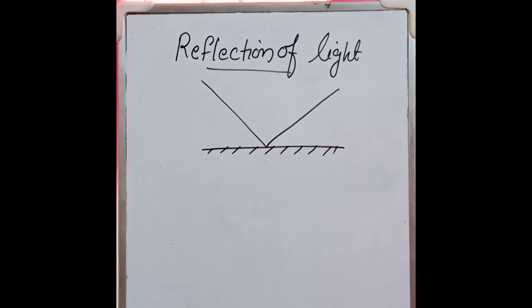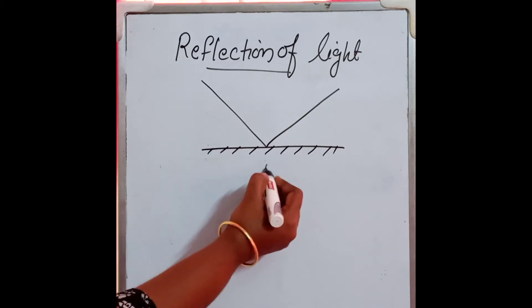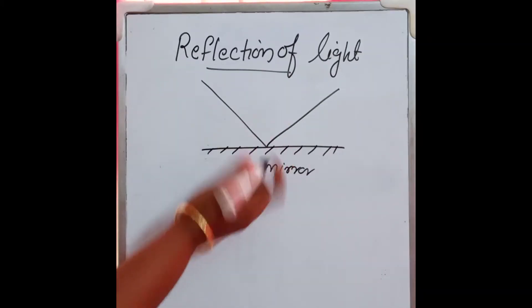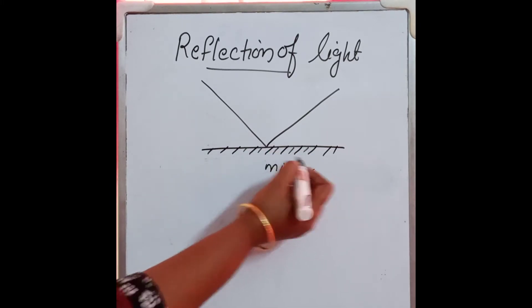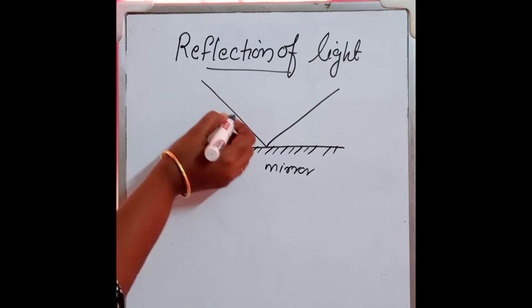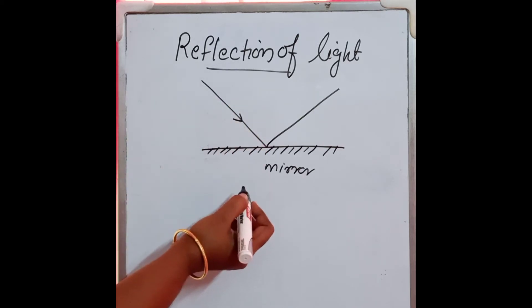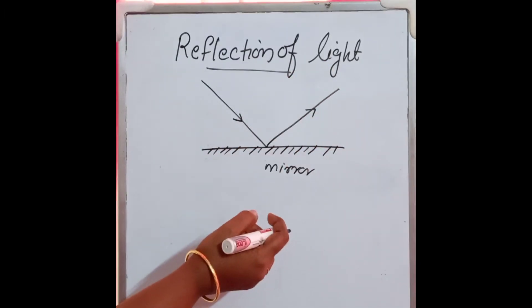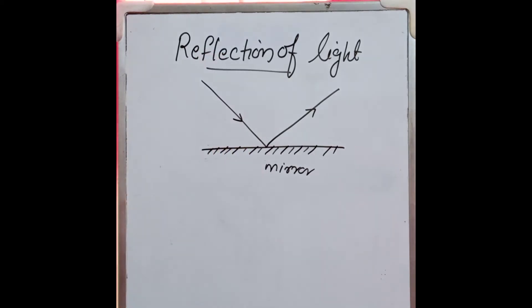Reflection of light. We have studied in previous classes about reflection of light — we can just recall it. When a ray of light falls on a smooth surface, like a mirror, one side is smooth and polished and the back surface is opaque. When light falls on this mirror, it will bounce back into the same medium. This process is called reflection of light. The bouncing of light when it falls on a smooth surface is called reflection.